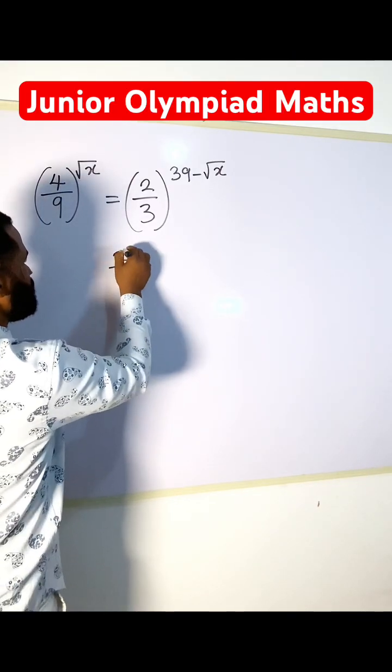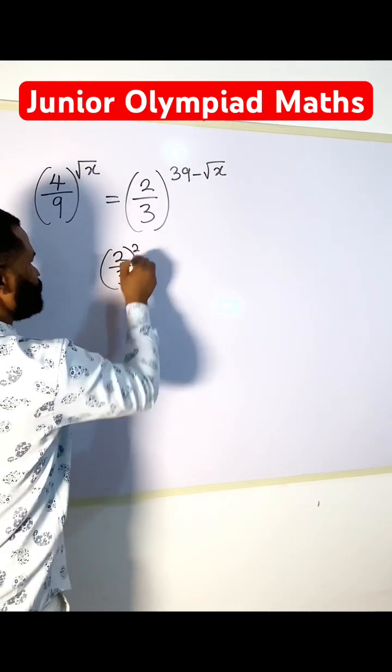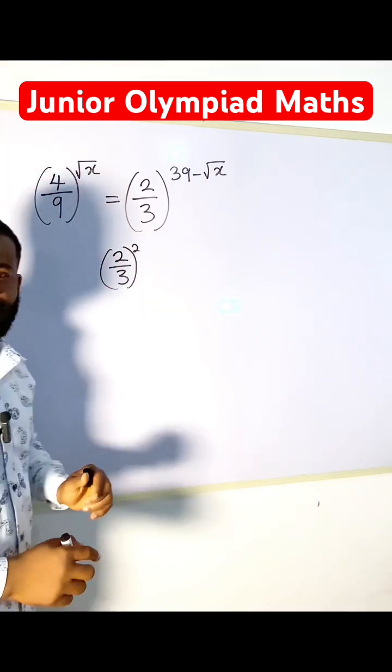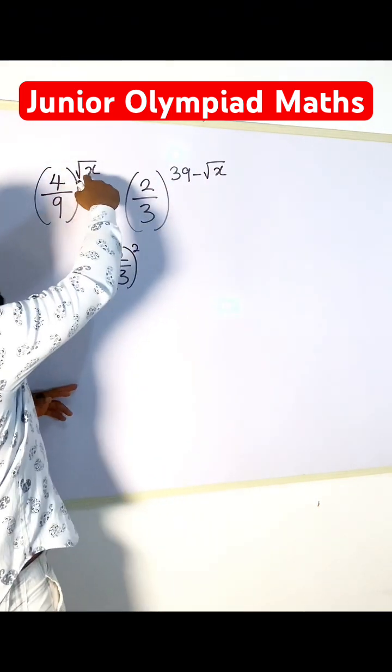2 over 3 raised to the power 2, because if I open this I will still have 4 over 9. So, but there is a power there,